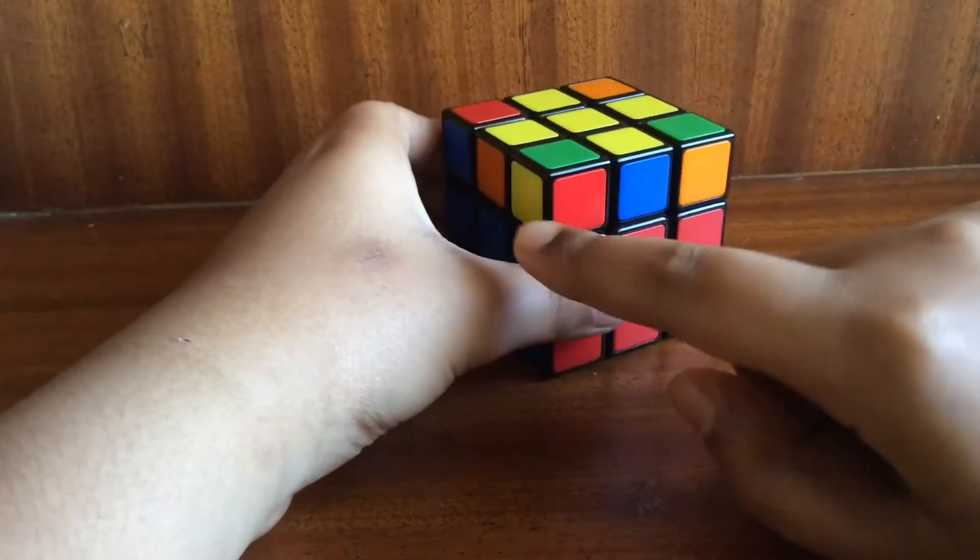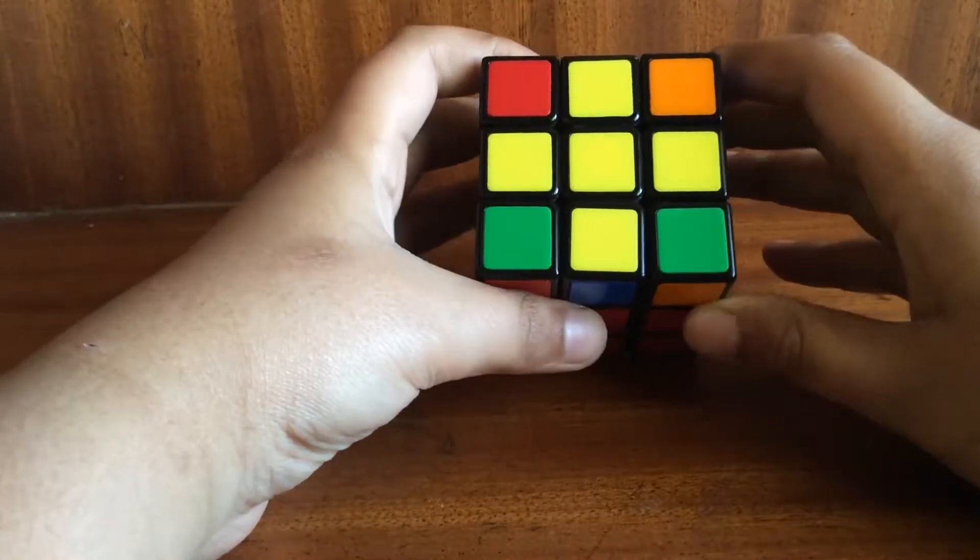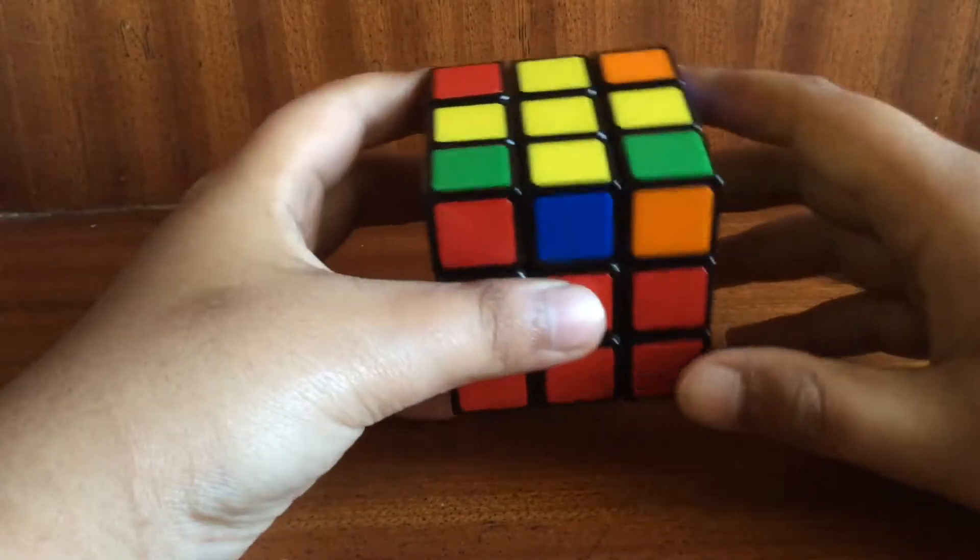So align it like this so that one yellow piece is on the left and do the following step. On this situation do this step.